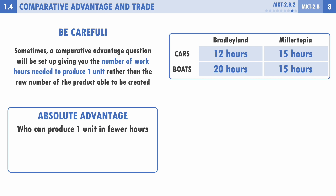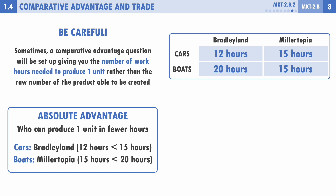For cars, Bradley Land has the absolute advantage because it takes them 12 hours to produce a car versus 15 hours for Millertopia. For boats, Millertopia has the absolute advantage — 15 hours versus 20 hours for Bradley Land. So absolute advantage works out the same way, just framed differently.